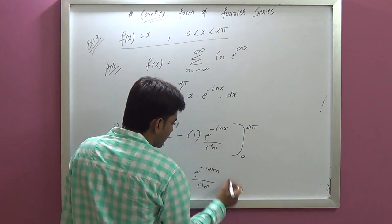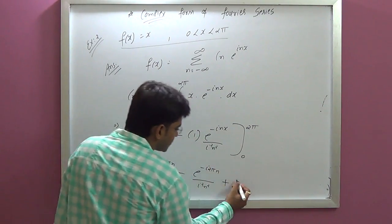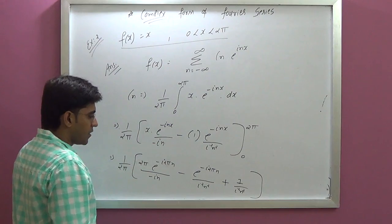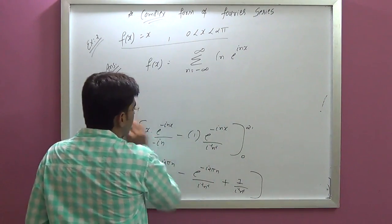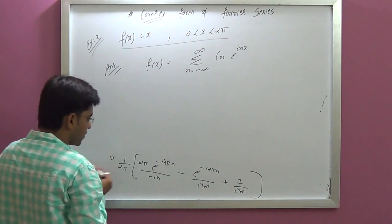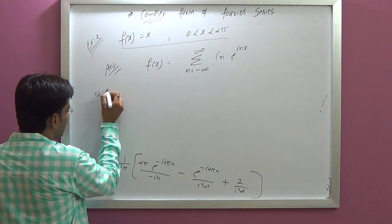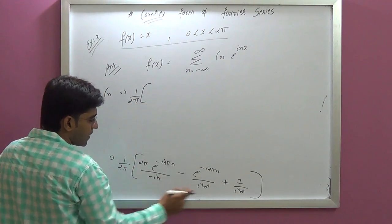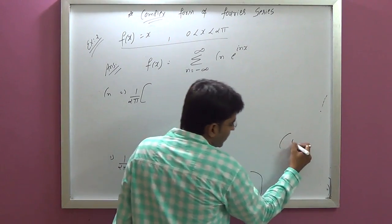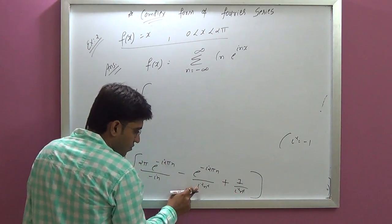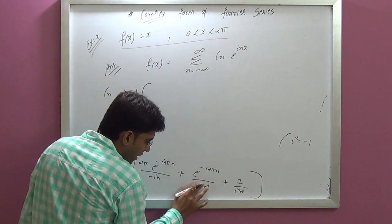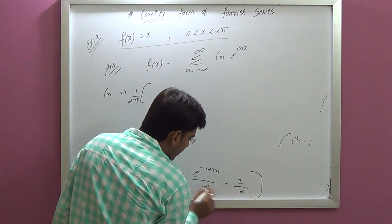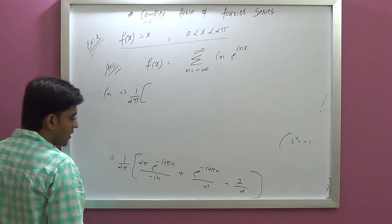Applying 2π to the second term: e raised to minus i2πn upon i squared n squared. Minus the lower limit terms — minus minus becomes plus — e raised to 0 equals 1, upon i squared n squared. Now simplification: Cₙ equals 1 over 2π. After simplifying, we get e raised to this, times i squared n squared, times e minus 1, and i squared n squared minus 1.